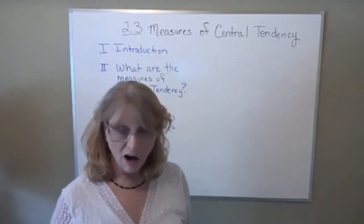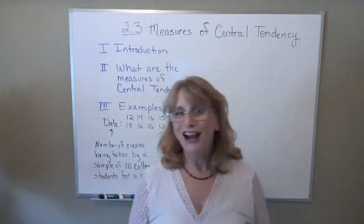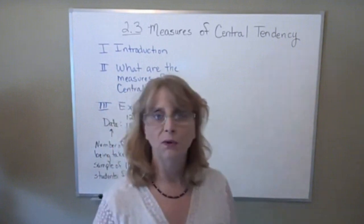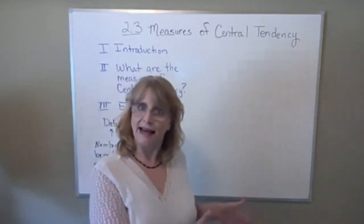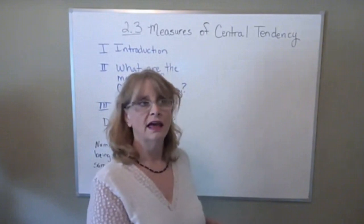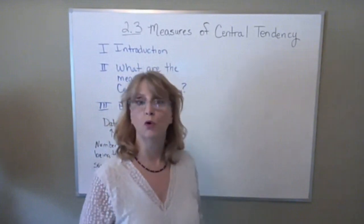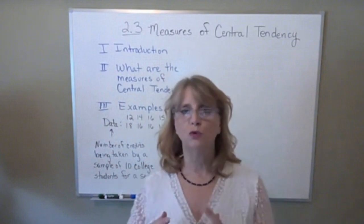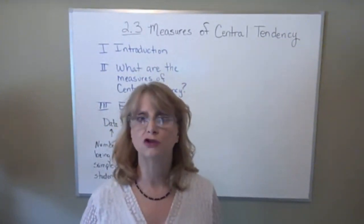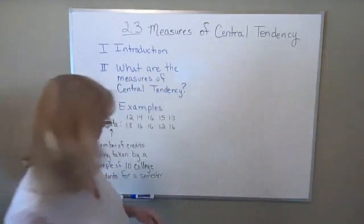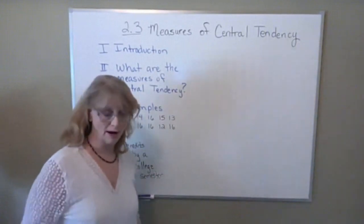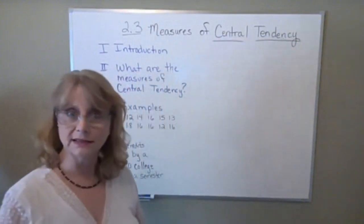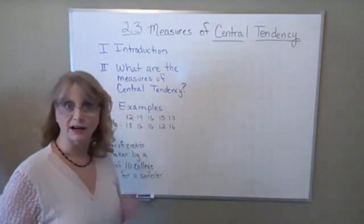Measures of Central Tendency are numbers that give you an idea about the middleness of the data — where the middle is. In fact, one of them is actually the middle. These are things you would take from the data we talked about collecting in section 2.2 — that organized data we put in a frequency distribution or some other organized format. Measures are numerical ways to describe the data, particularly the central tendency or middle tendency.